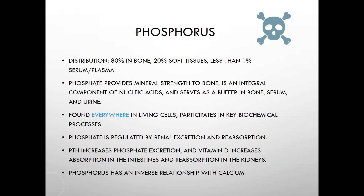For phosphorus, the distribution is 80% in bone, 20% in soft tissues, and less than 1% in serum and plasma. Phosphate provides mineral strength in bone, is an integral component of nucleic acids (DNA and RNA), and serves as a buffer in bone, serum, and urine for acid-base balance. It is found in all living cells and participates in key biochemical processes. It is regulated by renal excretion and reabsorption: parathyroid hormone increases phosphate excretion, and vitamin D increases intestinal absorption and renal reabsorption.